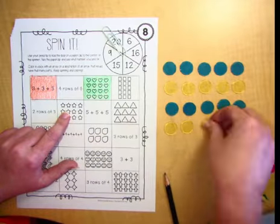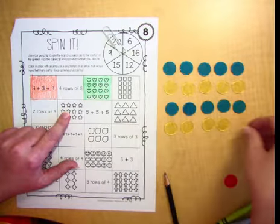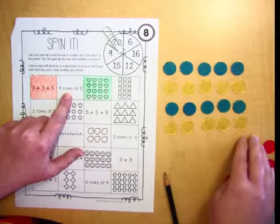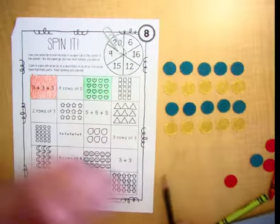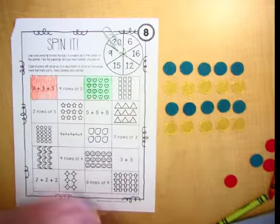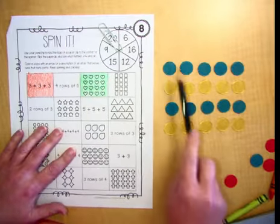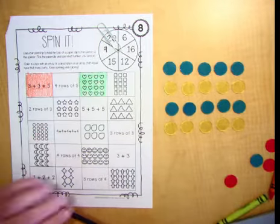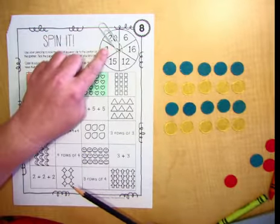And now this last one, let's see if I can get 1, 2, 3, 4, 5. I'm seeing if 4 rows of 5 equals 20. So I've got 4 rows. See, 1 row, 2 rows, 3 rows, 4 rows. And each row has 5 in it. 1, 2, 3, 4, 5.